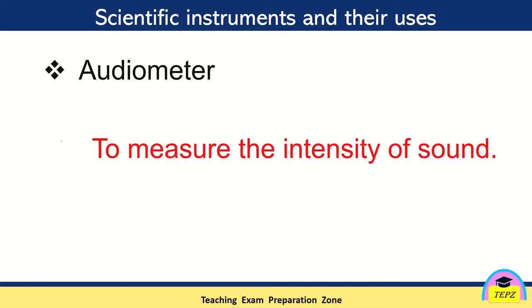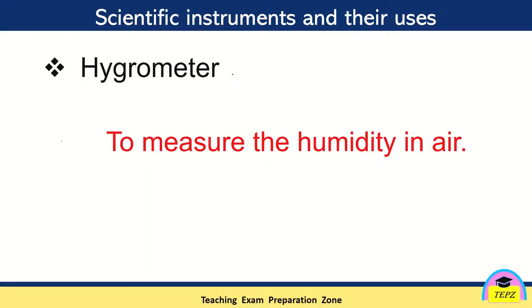Audiometer. Audiometer is used to measure the intensity of sound. The intensity of sound is measured with the instrument audiometer. Hygrometer is used to measure the humidity in air.